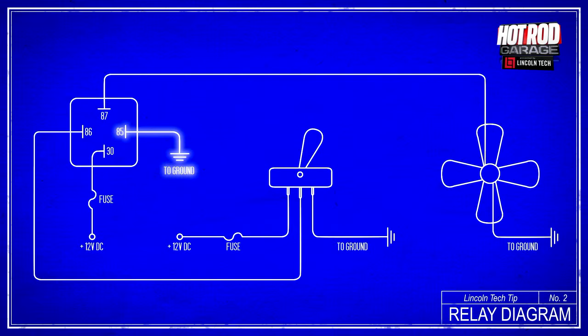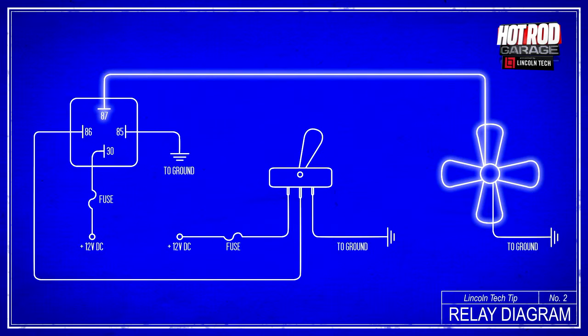Post number 85 would be sent to a good ground and number 87 the output would go to your high amperage accessory or light.